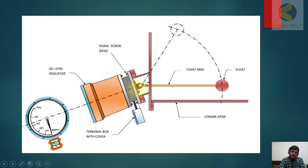This is the lever. This is a fixing screw M10. Terminal box with cover, here the alarm contact will be connected. Oil level indicator - this is the oil level indicator. It will be shown by this. So when oil is okay, the level will go up, and it's coming down with a simple level movement. It will be showing empty.